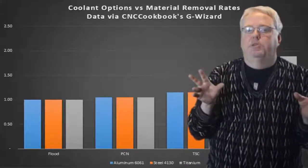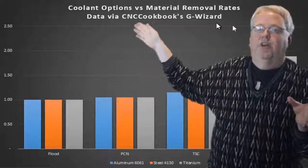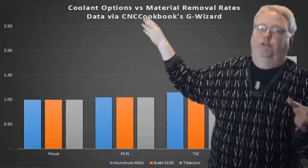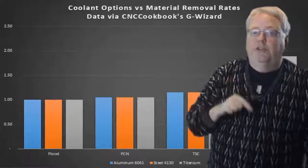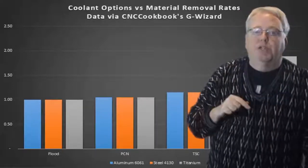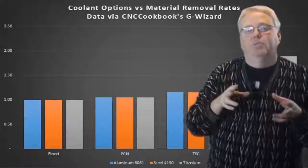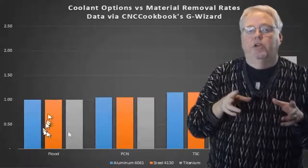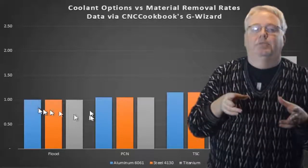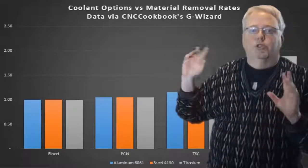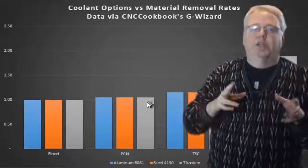Okay, let's compare the performance impact each of these methods has on three different materials. Now I've used CNC Cookbook's G-Wizard Feeds and Speeds Calculator to run a simulation based on a half-inch end mill running in aluminum, 4130 alloy steel, and titanium with each one of the coolant options so you can compare.